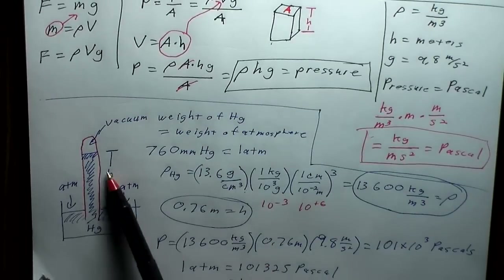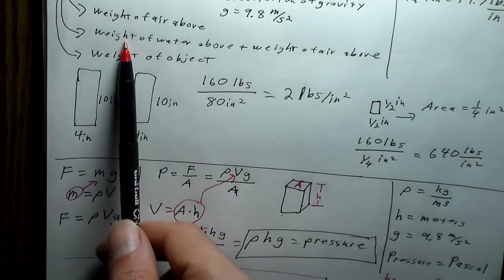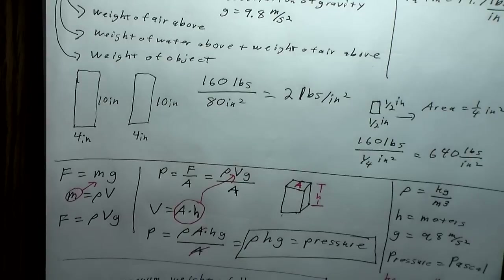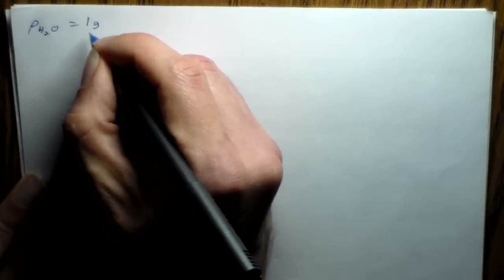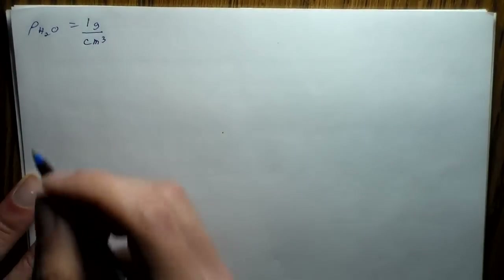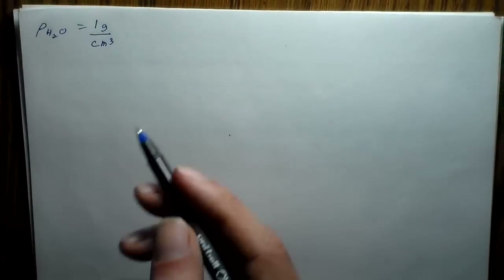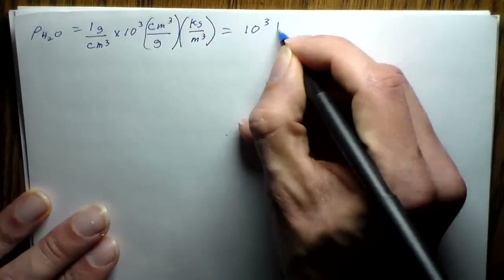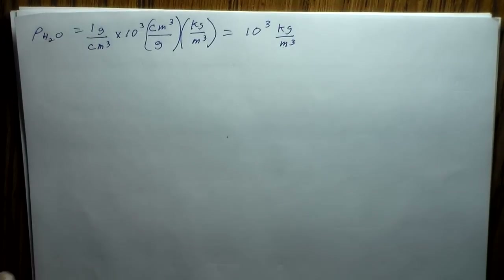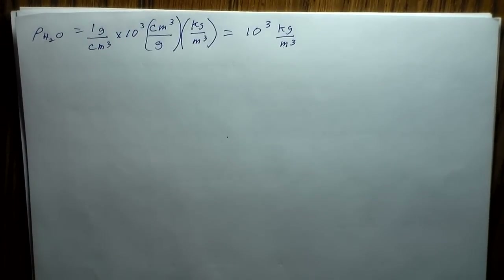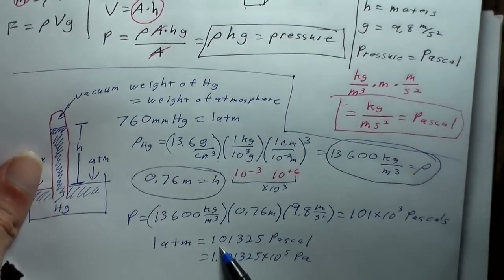Now we can figure out how much water equals one atmosphere of pressure. The density of water is approximately 1 gram per cubic centimeter, which converts to 10³ kilograms per cubic meter. We want to find the height, given that one atmosphere is 101,325 Pascals. Using pressure equals density times height times gravity: 101,325 = 10³ × h × 9.8.